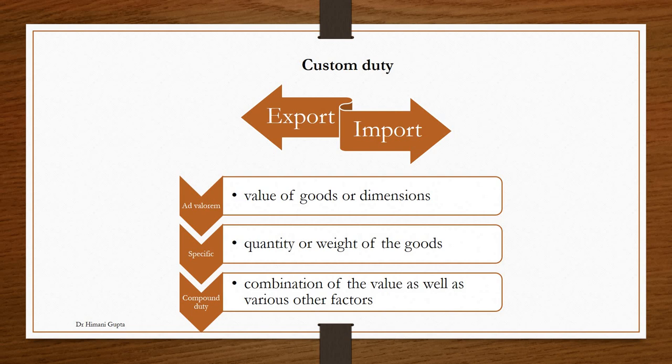For example, if you import goods worth 1,000 rupees into India and the tax rate is 10%, then you have to pay 100 rupees import duty. But if you import goods worth 1 lakh rupees, then 10% of 1 lakh comes to 10,000 rupees import duty. So as the value increases, the tax amount also increases.